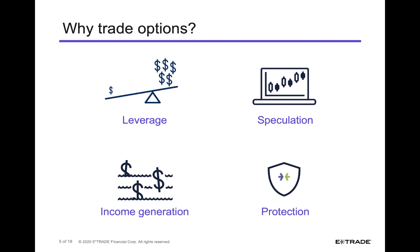So why trade options? First of all, options give you leverage. What is leverage? Leverage is simply a multiplied output for a given input — for a certain dollar of input, it would be more than a dollar of output. One way to get leverage would be with margin, which is simply borrowed money. Options also have leverage; they allow you to control more with less equity.